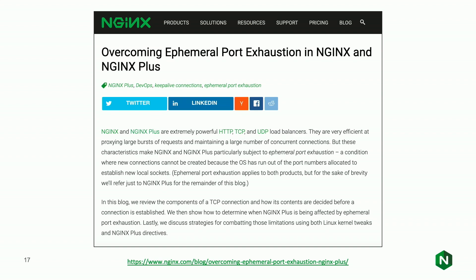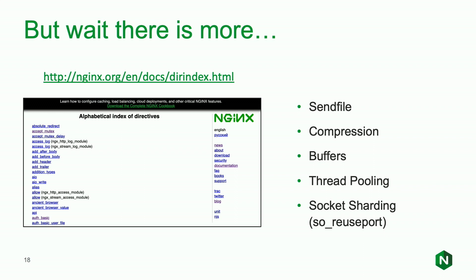There's a lot more to Nginx from a tuning perspective: things like sendfile, enabling compression, changing the way Nginx buffers data. We also support thread pooling to offload long blocking operations, and SO_REUSEPORT for socket sharding. There's a lot you can do — you kind of have to go one at a time, make a change, test performance, see how it affected things, and go down that path. But one thing that can really help performance — and it's part of today's demo — is caching.